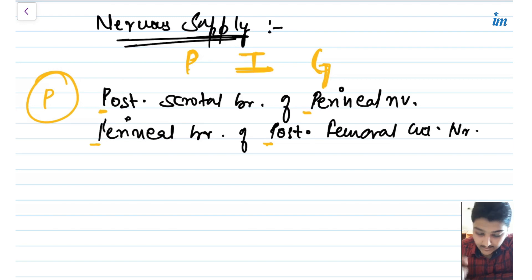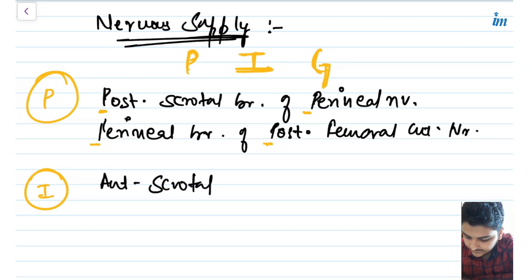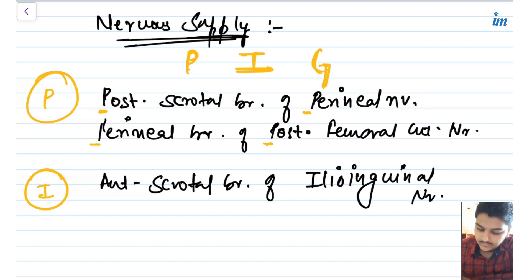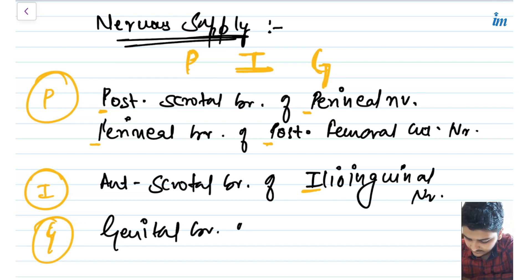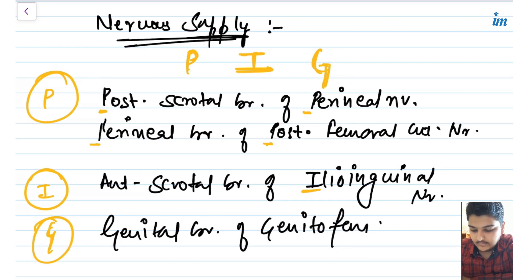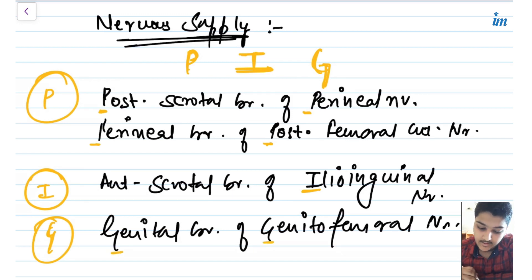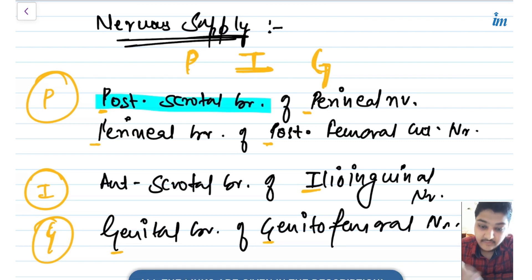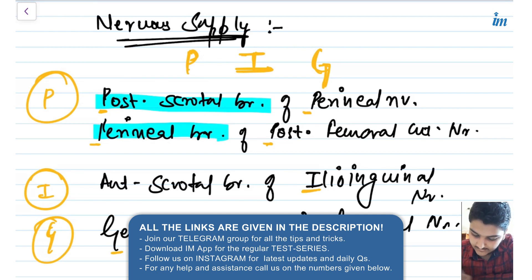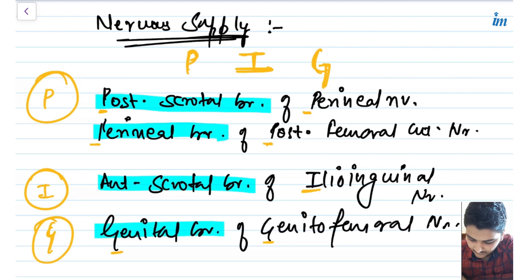For I in PIG, we have the anterior scrotal branch of the ilioinguinal nerve. For G, we have the genital branch of the genitofemoral nerve — again, G in both words. So the full nerve supply to the scrotum: posterior scrotal branch of perineal nerve, perineal branch of posterior femoral cutaneous nerve, anterior scrotal branch of ilioinguinal nerve, and genital branch of genitofemoral nerve.